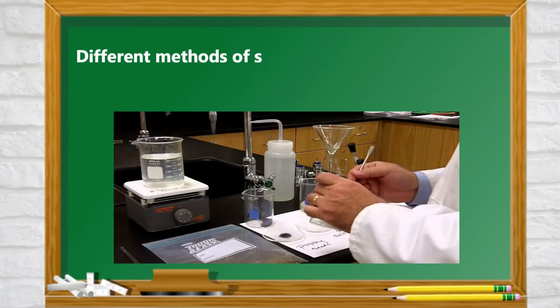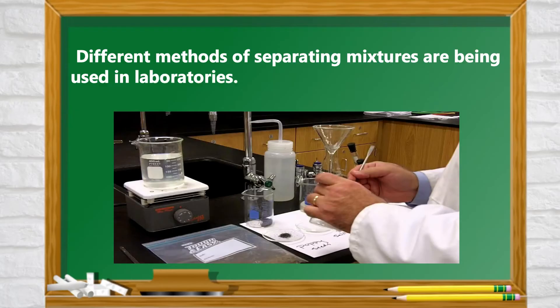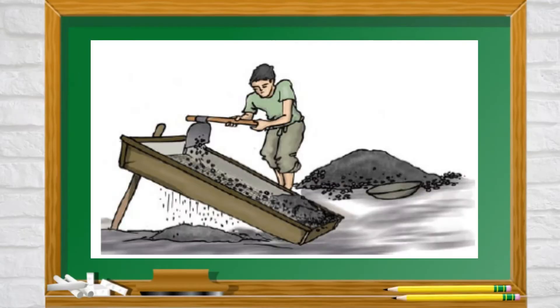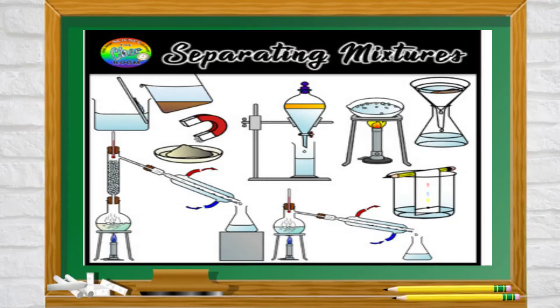Different methods of separating mixtures are being used in laboratories. Separating mixtures are done to make substances more useful. Have you seen construction workers putting the gravel on a screen like on the picture? What are they doing? What do you think will happen to the gravel on the screen? Here are several ways of separating the components of mixtures.